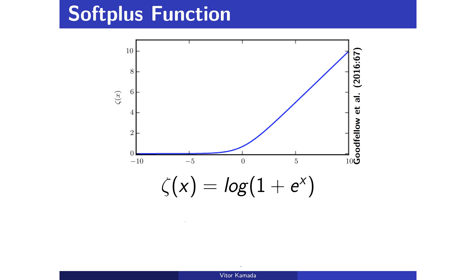The name softplus function came from an old function very used in deep learning, that is, x plus equals max between zero and x. The advantage of the softplus function is that it is continuous at zero, which helps for optimization problems.